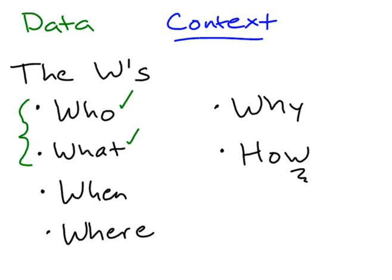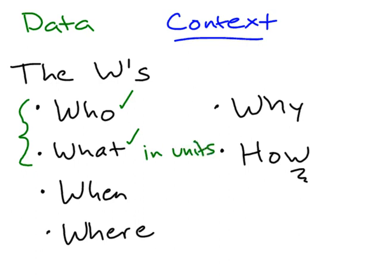If we focus on the who and the what just a little bit more — sometimes the who is who collected the data, and sometimes the who is who the data was collected from. Focusing on the what, we're asking what was collected and also in what units. Make sure that you're always asking about the W's in order to figure out the context.